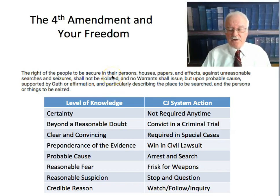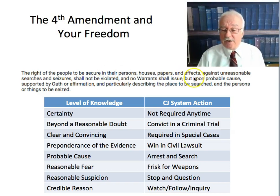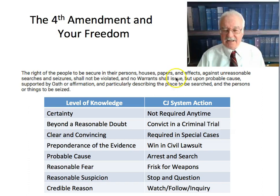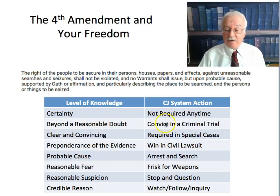The magic word in the Fourth Amendment is 'unreasonable.' The Fourth Amendment doesn't ban the seizure of people or property, or the searching of people or property — it only bans that when it's unreasonable. The Fourth Amendment tells us that probable cause is the level of knowledge that makes it legal to arrest and search people and things. If you have less than probable cause, you can do things short of full arrest and search — like frisking, stopping, questioning, watching, or following. If you have information higher than probable cause, like beyond a reasonable doubt, you can put somebody in a prison or jail.